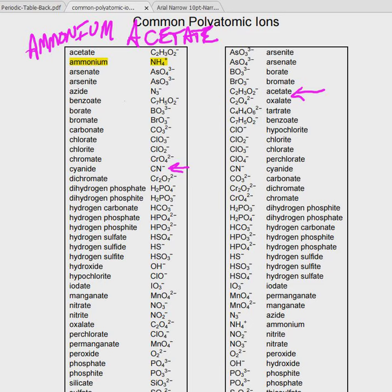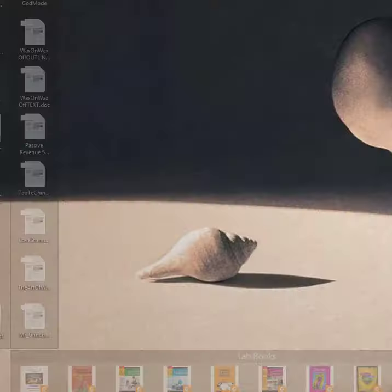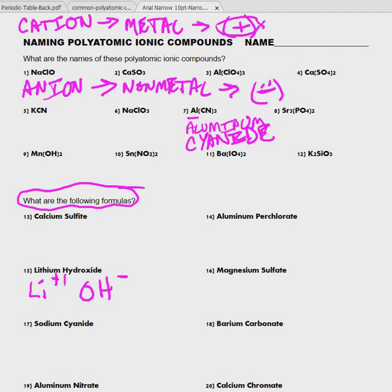Hydroxide would be on the left-hand column, OH, it has a negative one charge. We go back to our worksheet. Hydroxide would be OH. Lithium has a positive one and OH would have a negative one. Since they're both the same, we would just write LiOH.